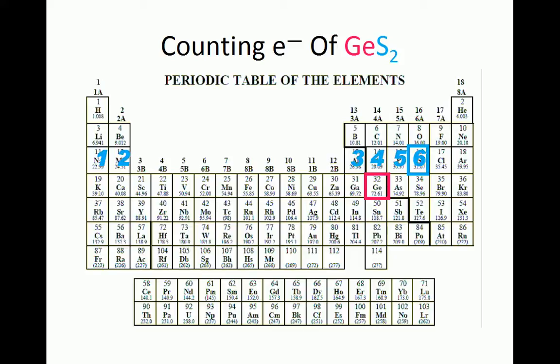Next, we'll draw the preliminary structure by placing the less electronegative germanium in the center, attaching sulfurs with single bonds and completing the octet of all atoms with lone pairs.